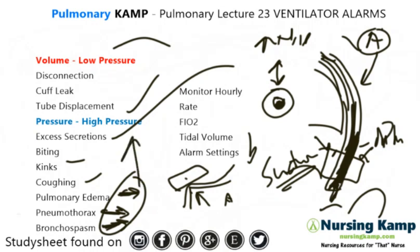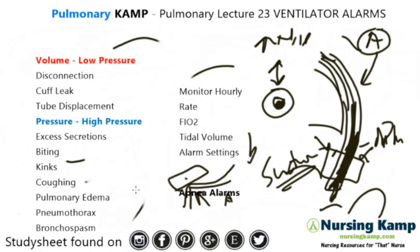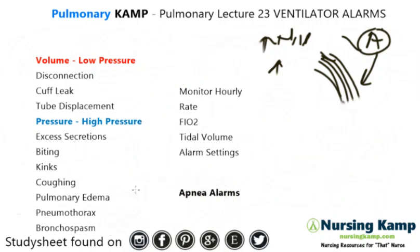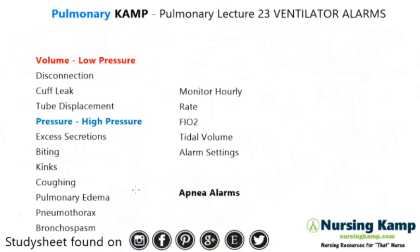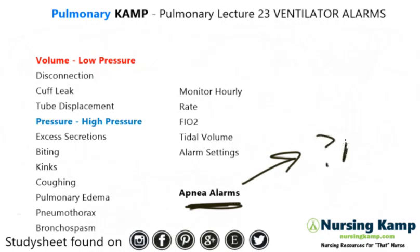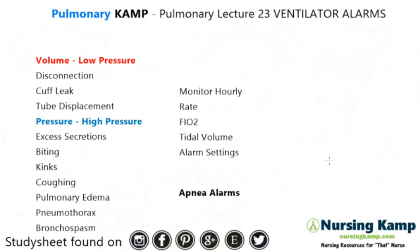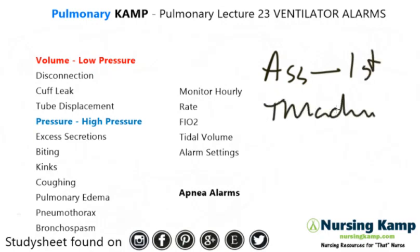There's also an apnea alarm, which is more important with support modes like PSV, BiPAP, and CPAP — when you want the patient to breathe at a set rate but they're not breathing, that's problematic. However, on the NCLEX the most likely scenario is hearing a low-pressure alarm. You assess the patient first, then look at the machine, and then address the problem.